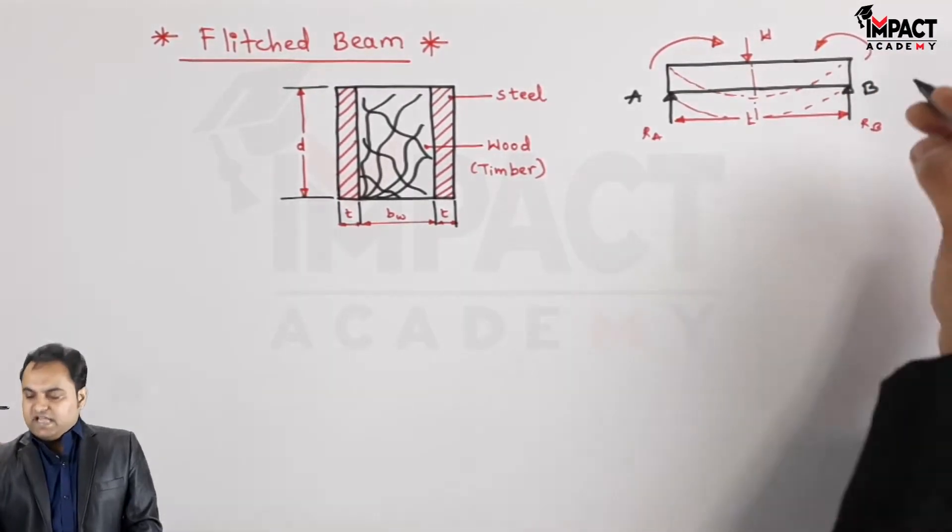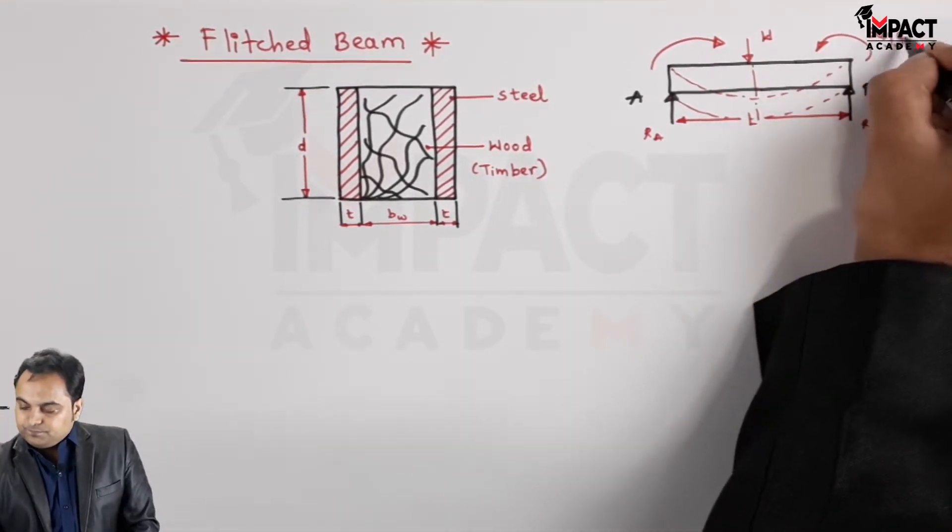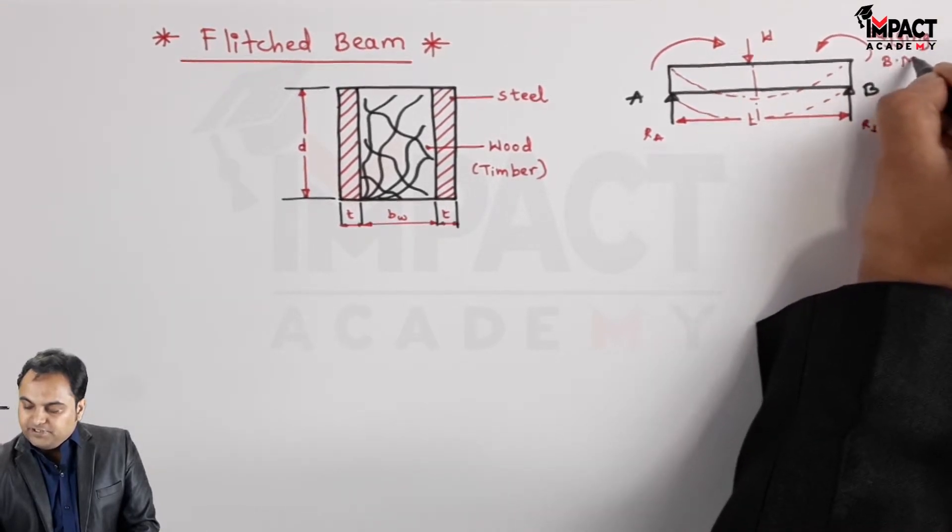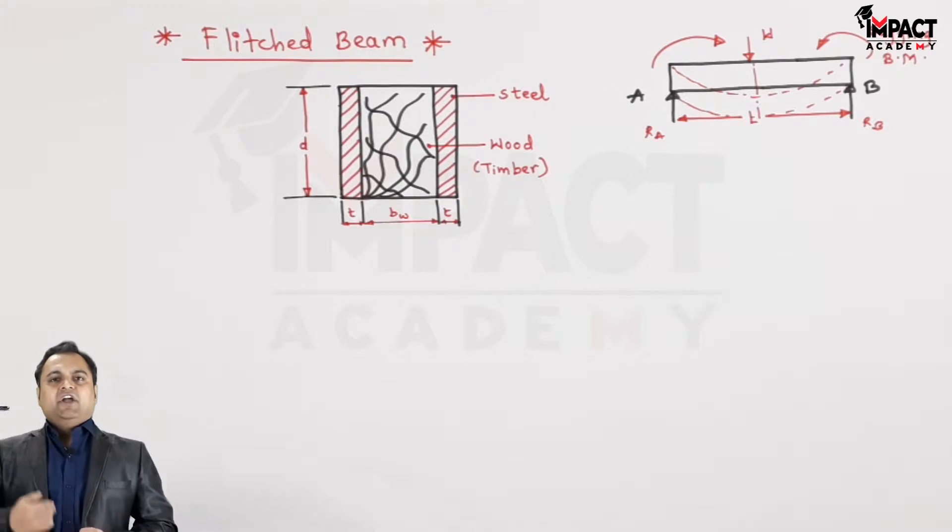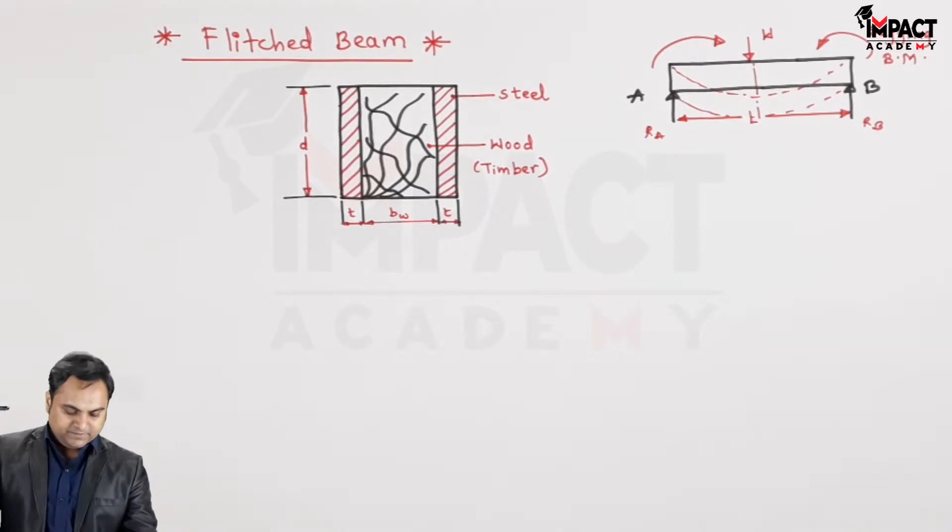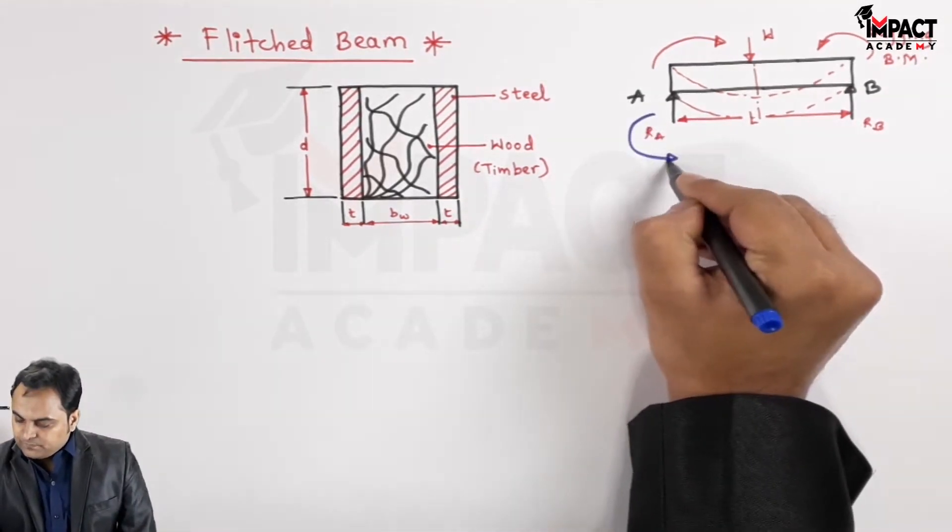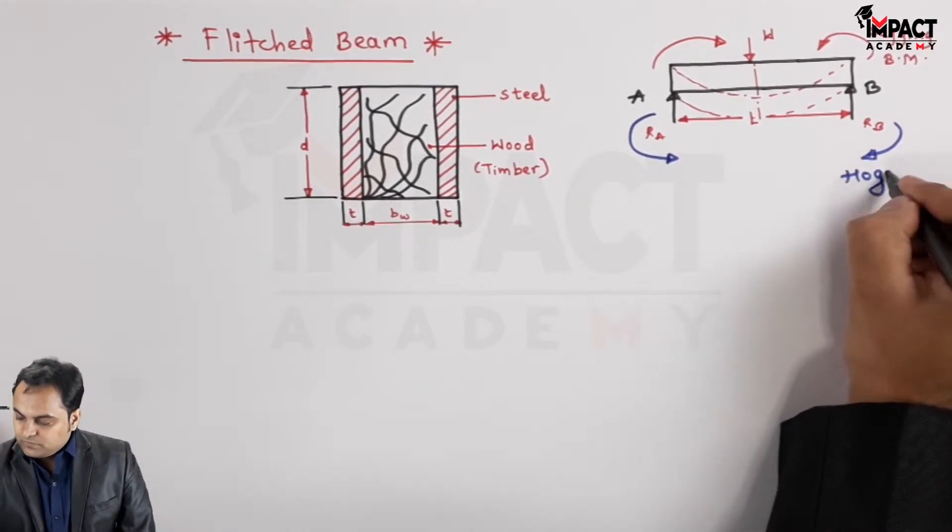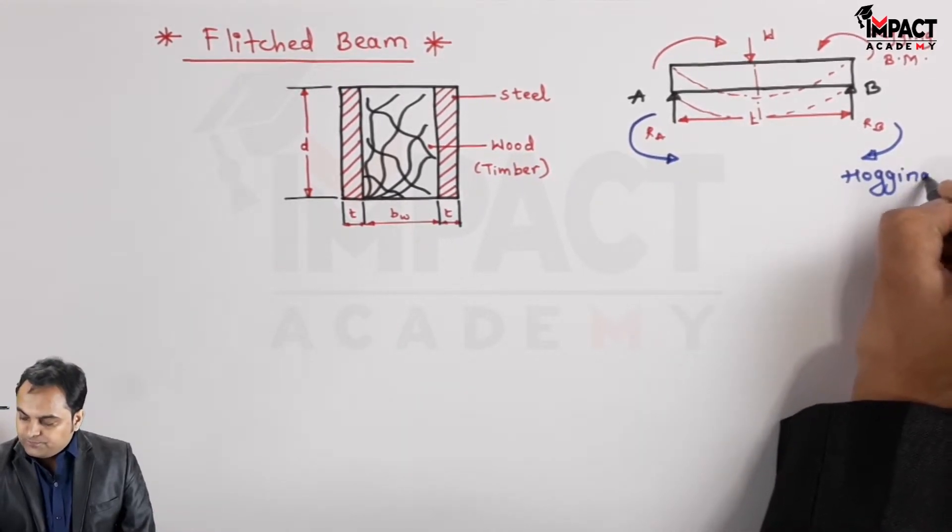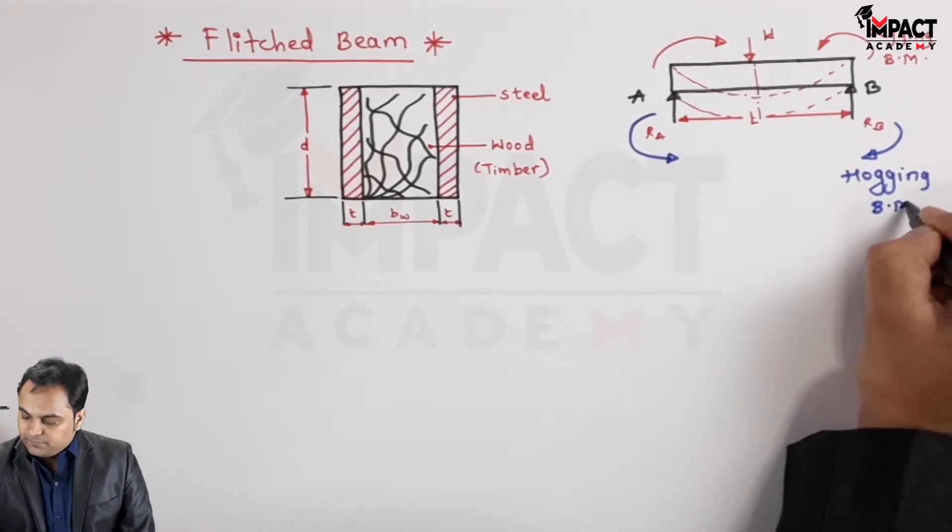which is called as the sagging bending moment. The sagging bending moment. So the material of the beam should be such that it should resist this sagging bending moment and opposite to sagging is the hogging bending moment.